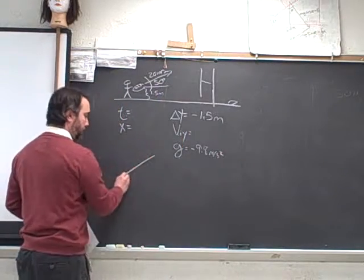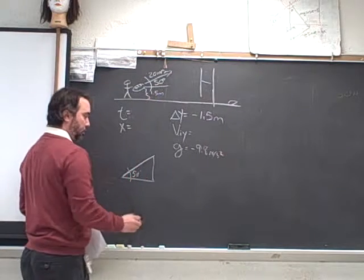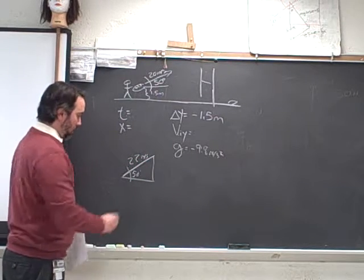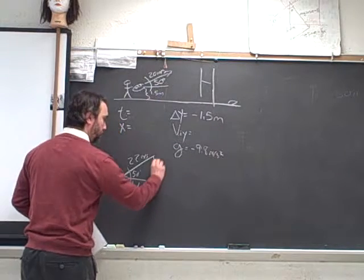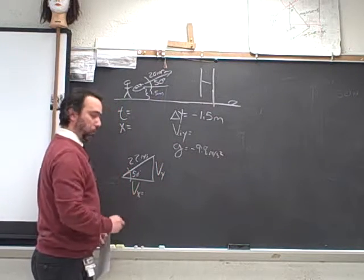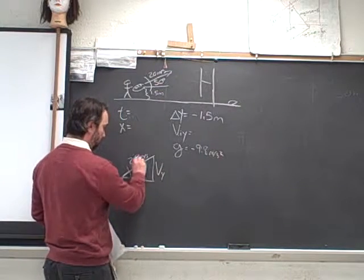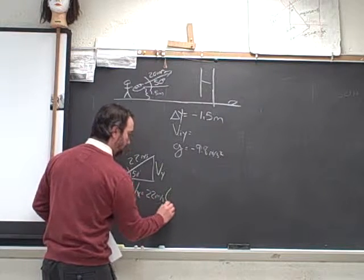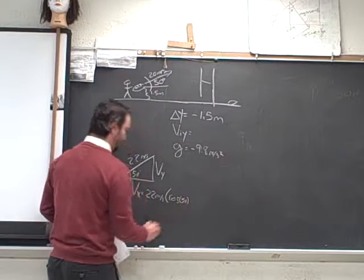So we have a triangle that is 50 degrees and 22 meters per second in magnitude along the hypotenuse. And so to find the velocity in both the x direction and the y direction, we're going to use some trigonometry. So the velocity in the x direction is going to be this velocity of 22 meters per second times the cosine of 50 degrees.